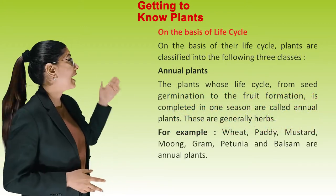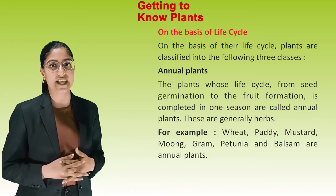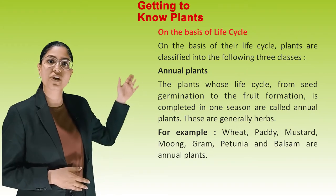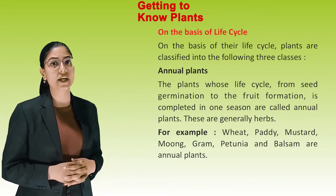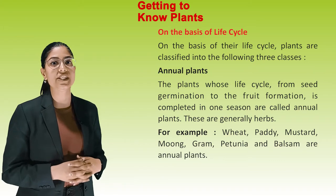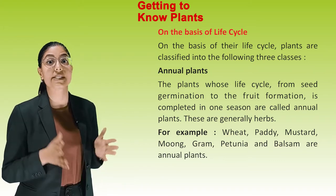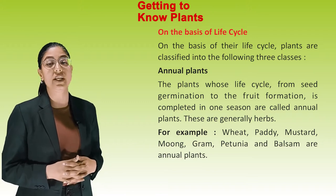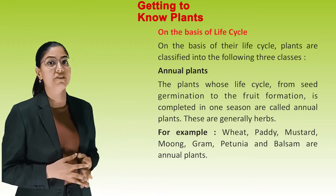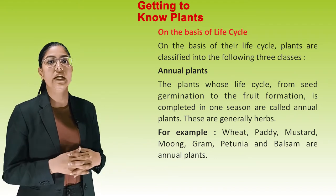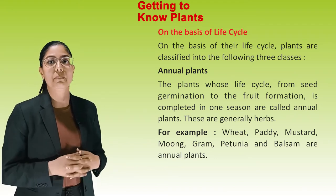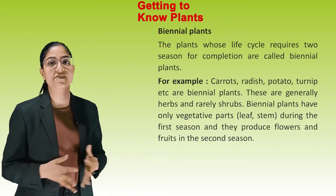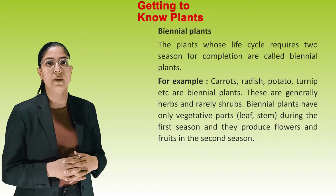On the basis of Life Cycle, plants are classified into three classes. First, Annual Plants — plants whose life cycle from seed germination to fruit formation is completed in one season are called Annual Plants. These are generally herbs. For example, Wheat, Paddy, Mustard, Moong, Gram, Petunia and Balsam are Annual Plants.